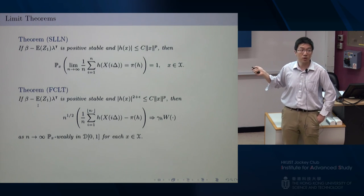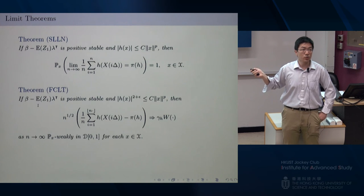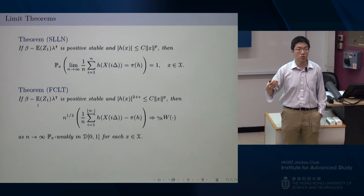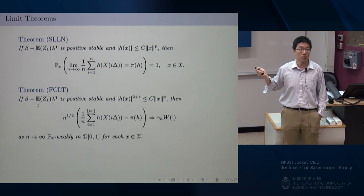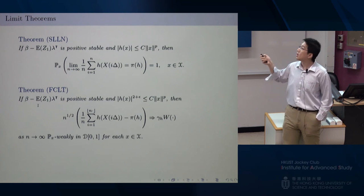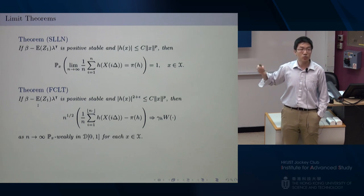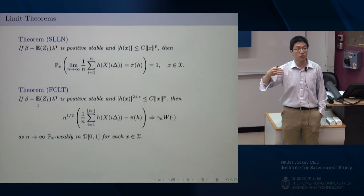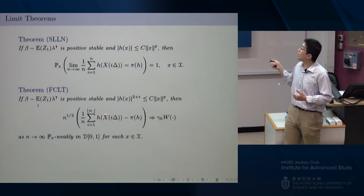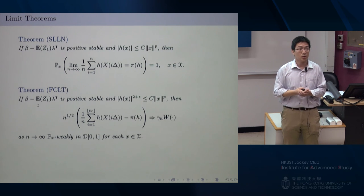Given exponential ergodicity, one can establish the strong law of large numbers and even a functional central limit theorem. One remark: to prove the strong LLN, you actually do not need exponential ergodicity — only the existence of the stationary distribution, i.e., positive recurrence, suffices. But for the central limit theorem, you do need exponential ergodicity, because you need the process to converge to equilibrium fast enough. Without it, the existing mathematical tools cannot prove a functional CLT.